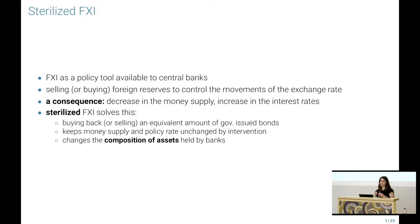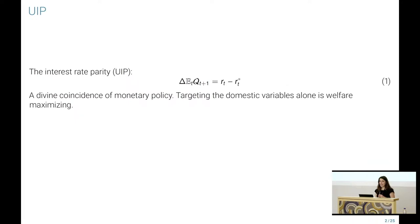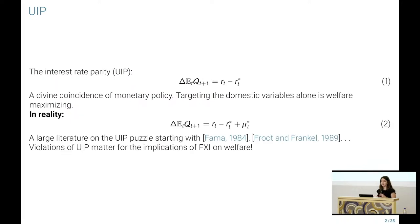I focus on sterilized FXI because we're also going to think about financial imperfections — especially a similar model to what we just talked about. We might understand how sterilization can affect the composition of assets that banks hold. UIP comes into big play here, and we know UIP doesn't hold, so this can lead to some deviations from divine coincidence, and we might be able to say something about welfare implications of FXI.